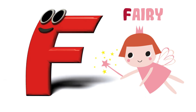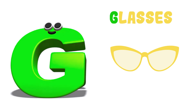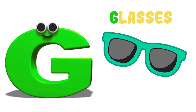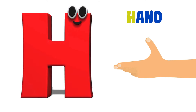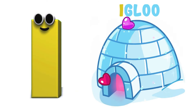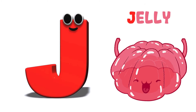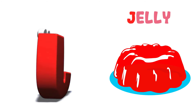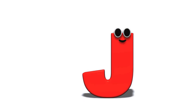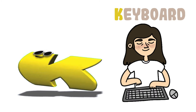F is for Fairy. F-Fairy, F-Fairy, F-Fairy. G is for Glasses. G-Glasses, G-Glasses. H is for Hand. J is for Jelly. Jelly, J, jelly, J, jelly. K is for Keyboard. Keyboard, keyboard, keyboard.